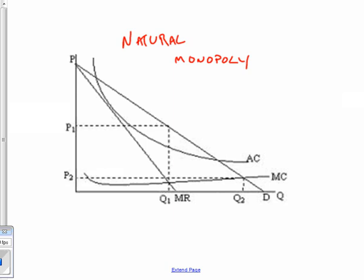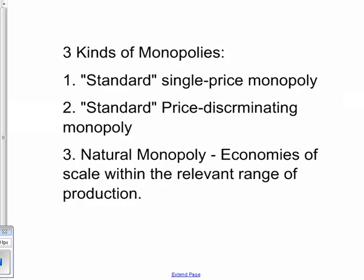Welcome to the second part of the monopoly discussion. The last video compared the three kinds of monopolies — single price and price discriminating — and now we're going to talk about natural monopolies. A natural monopoly is a firm that achieves economies of scale within the relevant range of production.